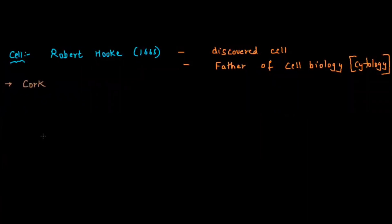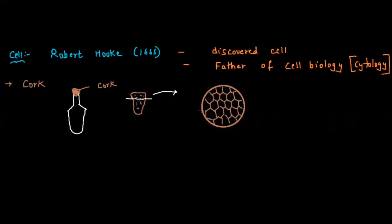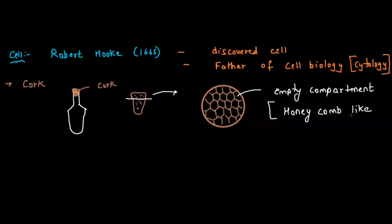Robert Hooke performed an experiment where he took a cork — the covering seen on bottles — sliced a thin section, and observed it under the microscope. He saw small hexagonal chambers that appeared like a honeycomb structure. These appeared to be empty compartments or empty rooms. That's why Robert Hooke came up with the word 'cellular,' and finally gave the word 'cell,' which means empty compartments. In Greek, it means honeycomb-like structure.